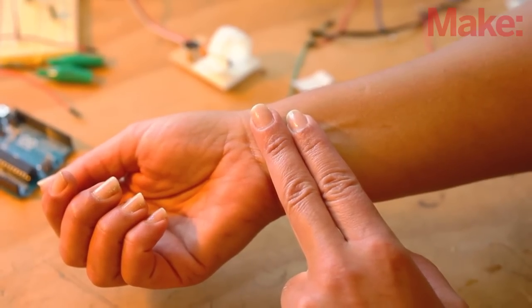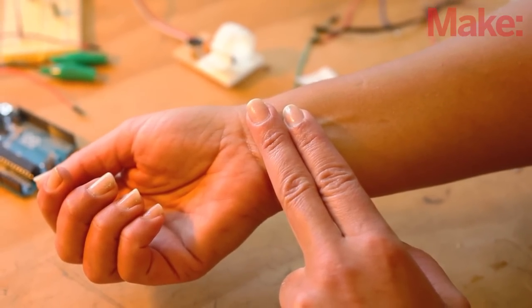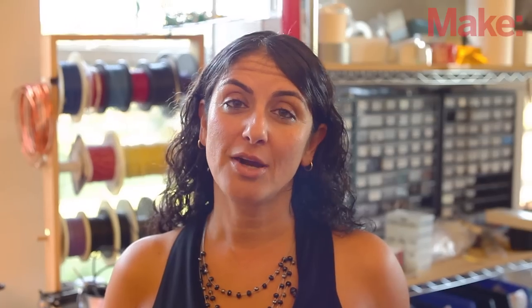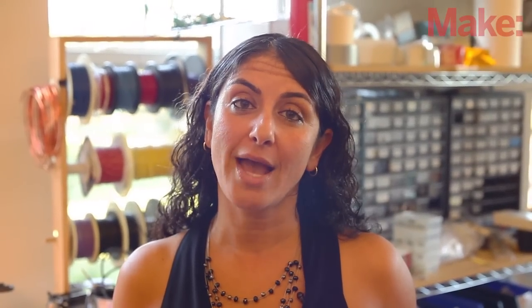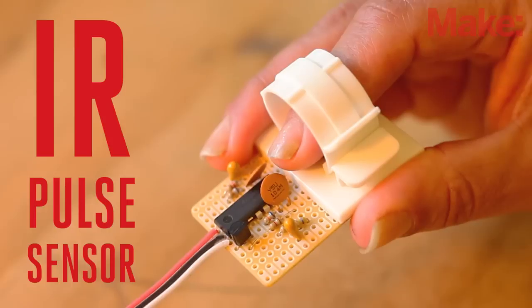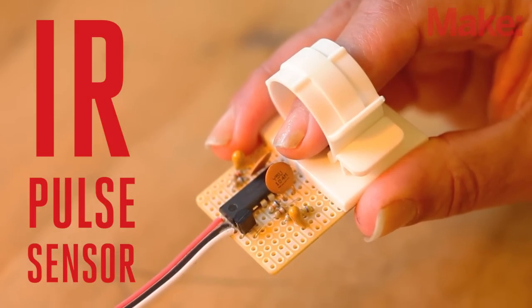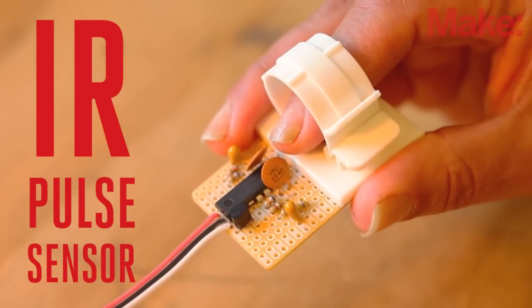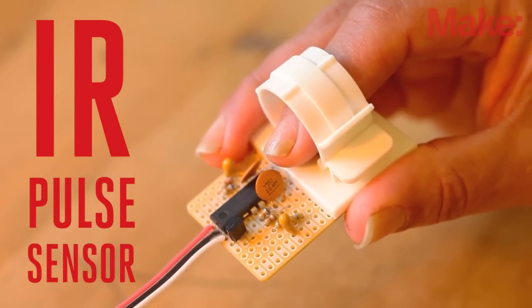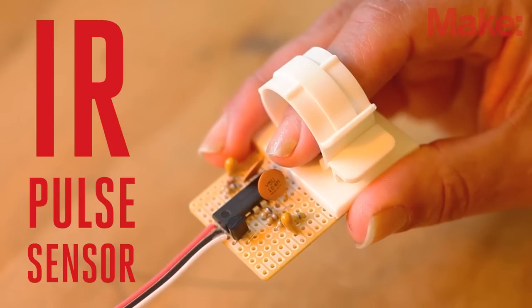Taking your pulse is as simple as holding a finger to your neck or wrist and timing the beats with your watch. But if you want to monitor your pulse over a period of time, you'll need a way to turn that mechanical action into an electrical signal. In this project, we'll build a sensor that fits over your fingertip and reads the amount of infrared light reflected by the blood circulating inside your body.